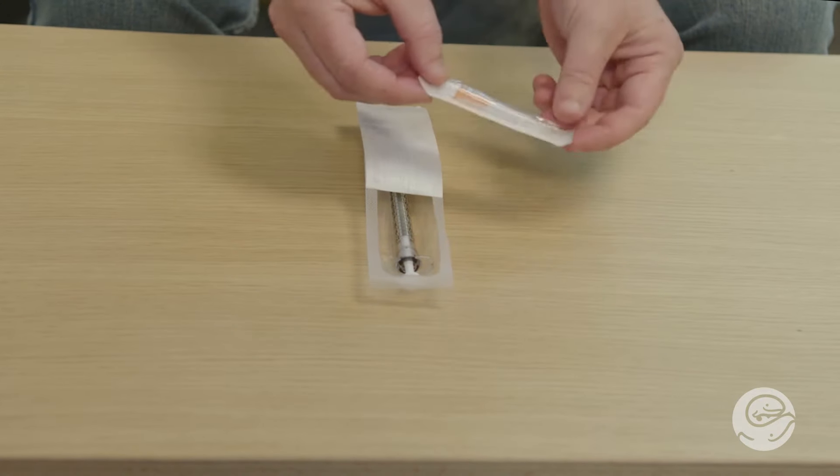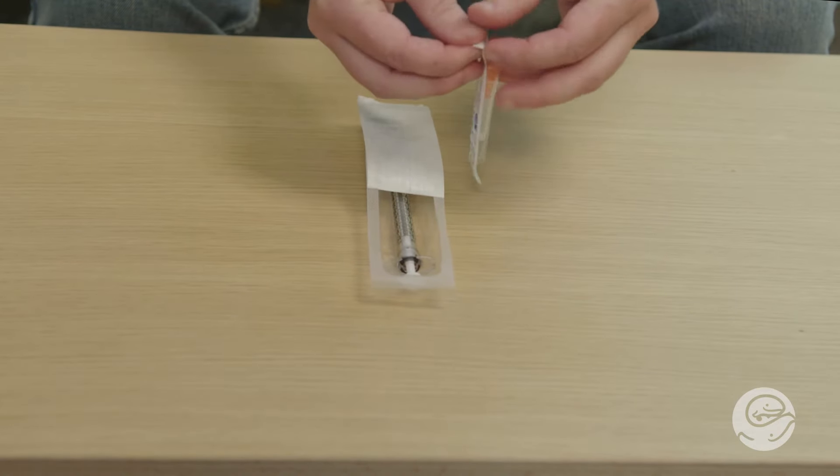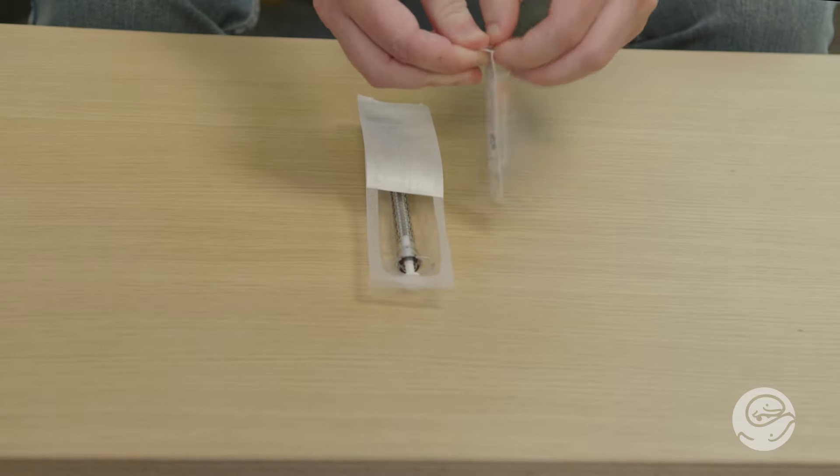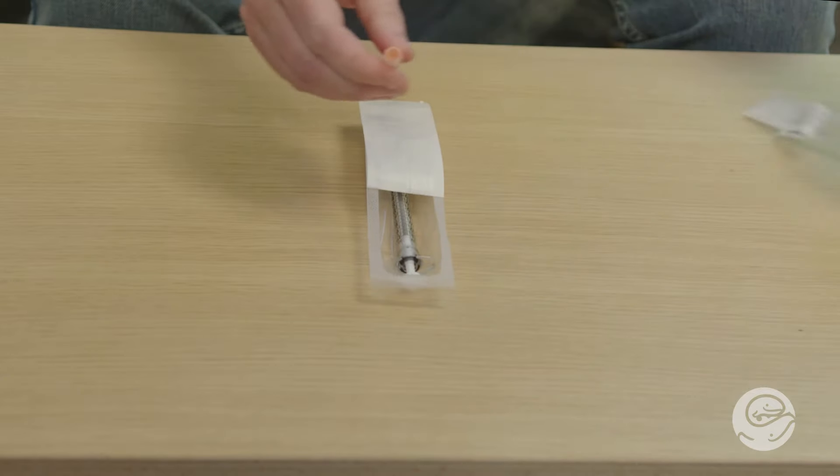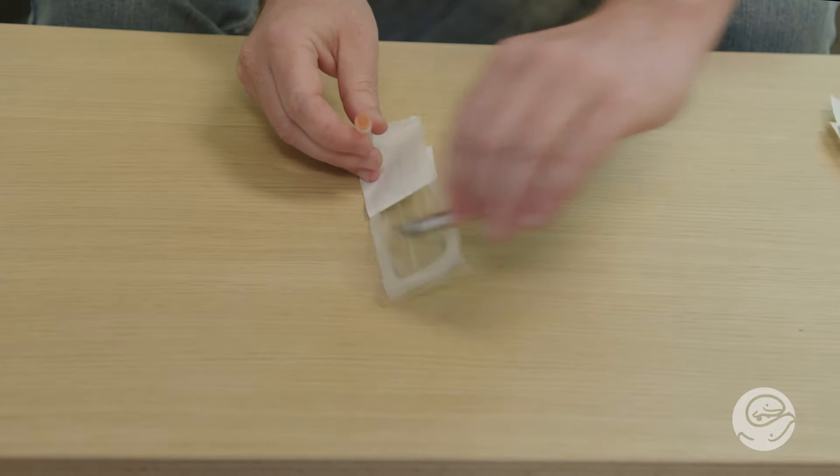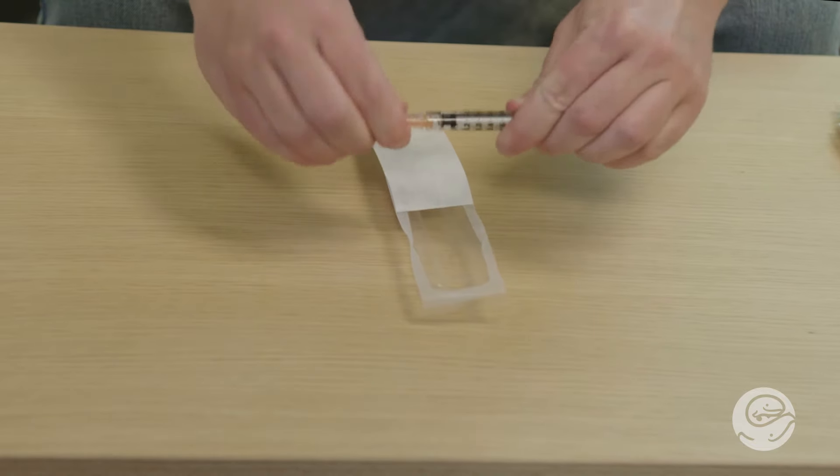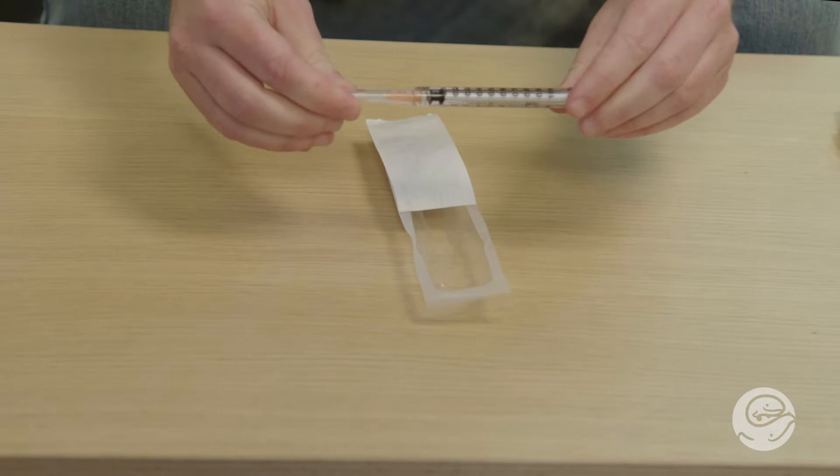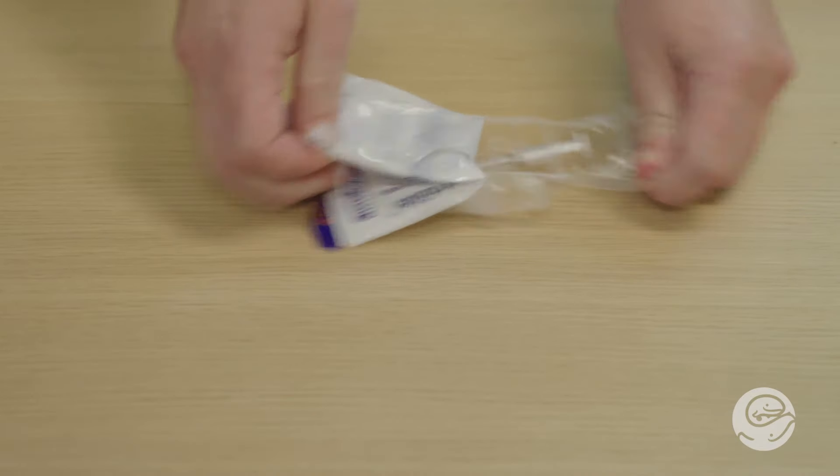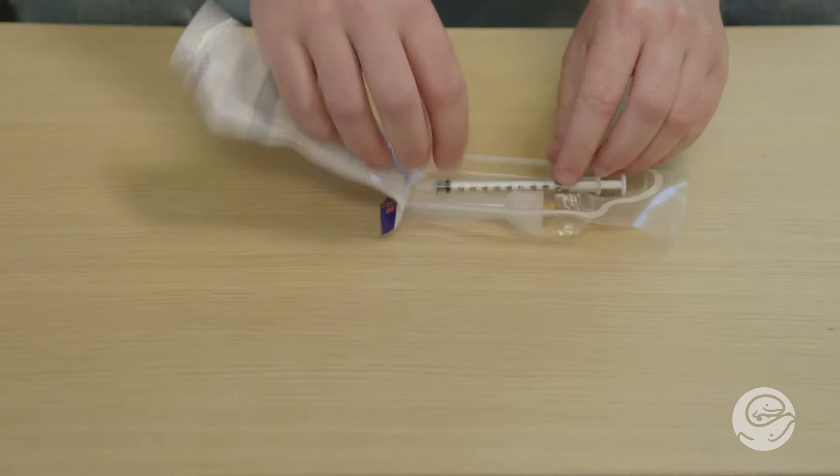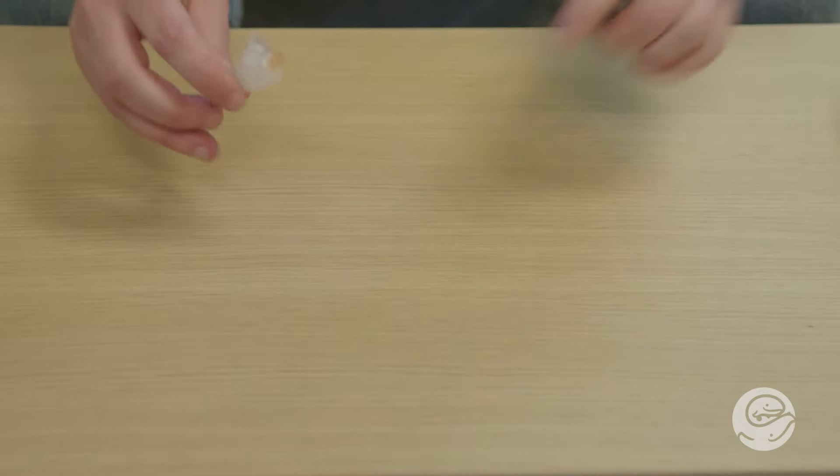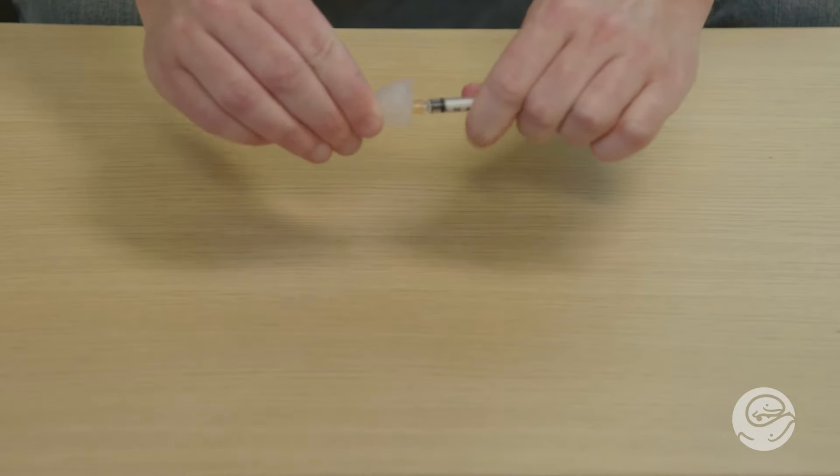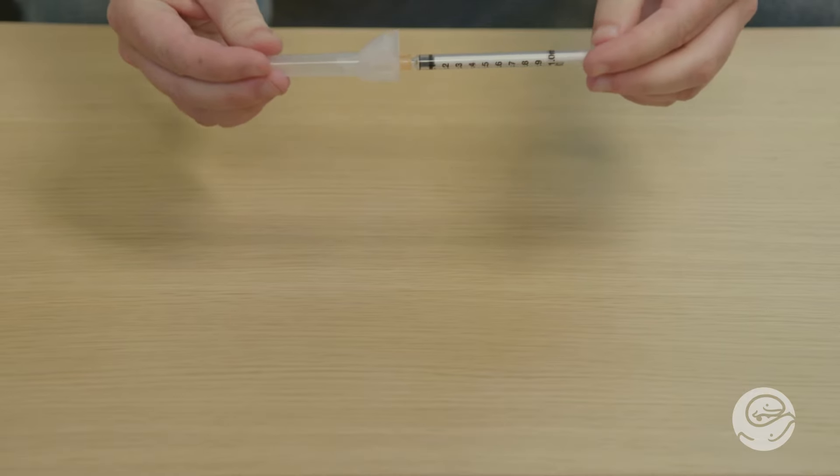Prepare your dose. If your 25 gauge 5/8 inch needle and 1 mL syringe are separate, remove them from the sterile packaging, and connect them. Do not uncap the needle. There are two different types of connections for syringes. A Luer Lock that twists into the needle connection, or a Slip Tip that you simply push together. Both are okay to use. Your needle and syringe may also come as one unit. Either way is okay. Just make sure the needle size is correct.